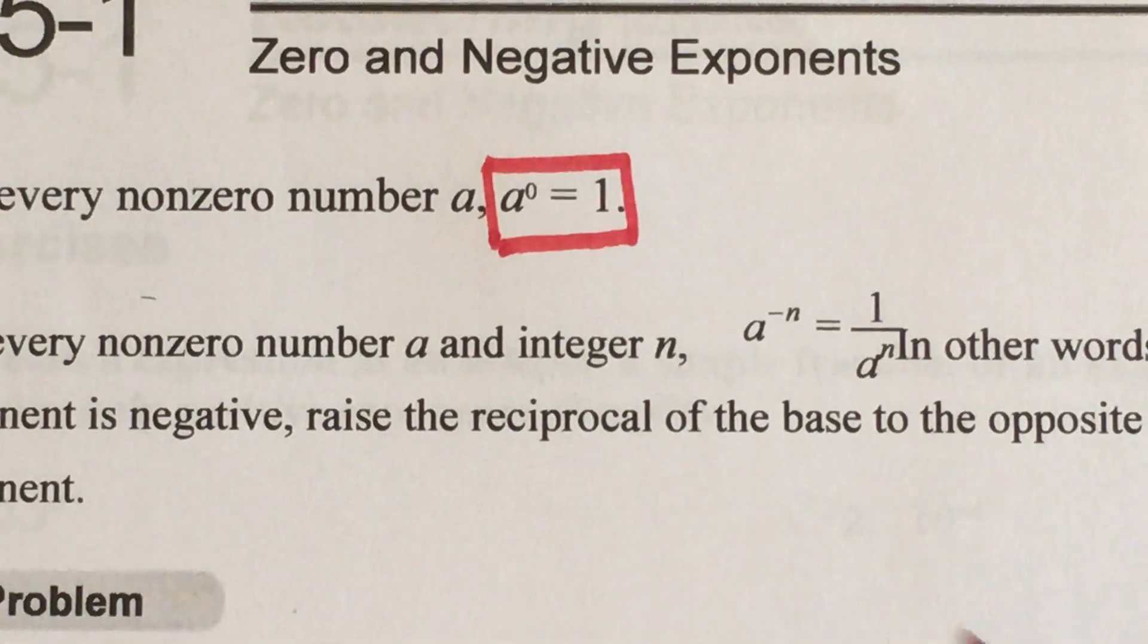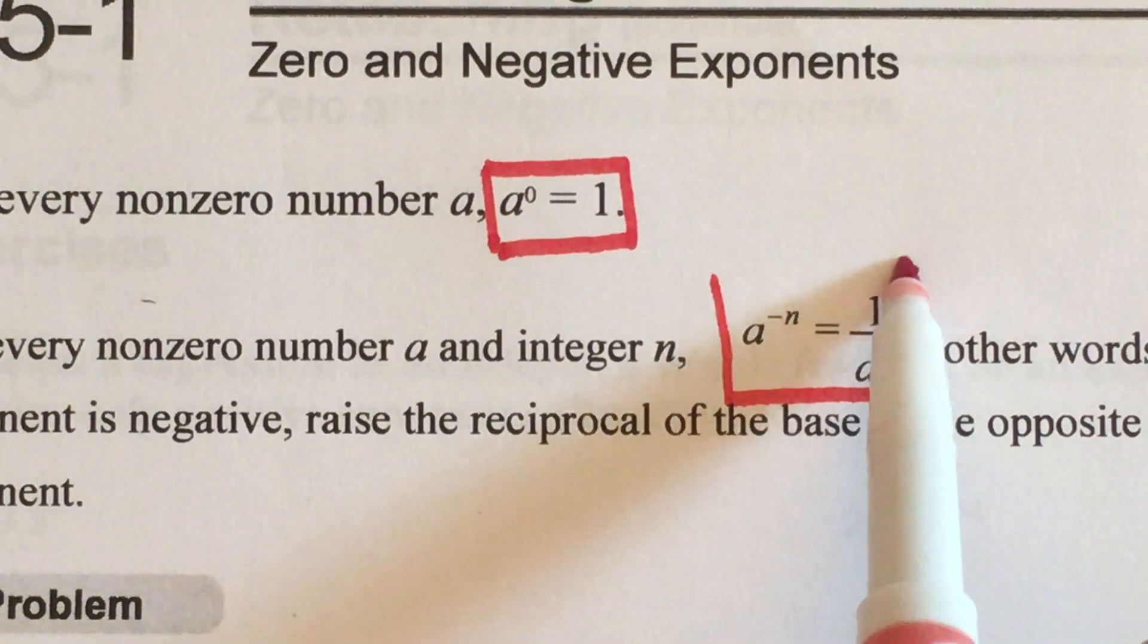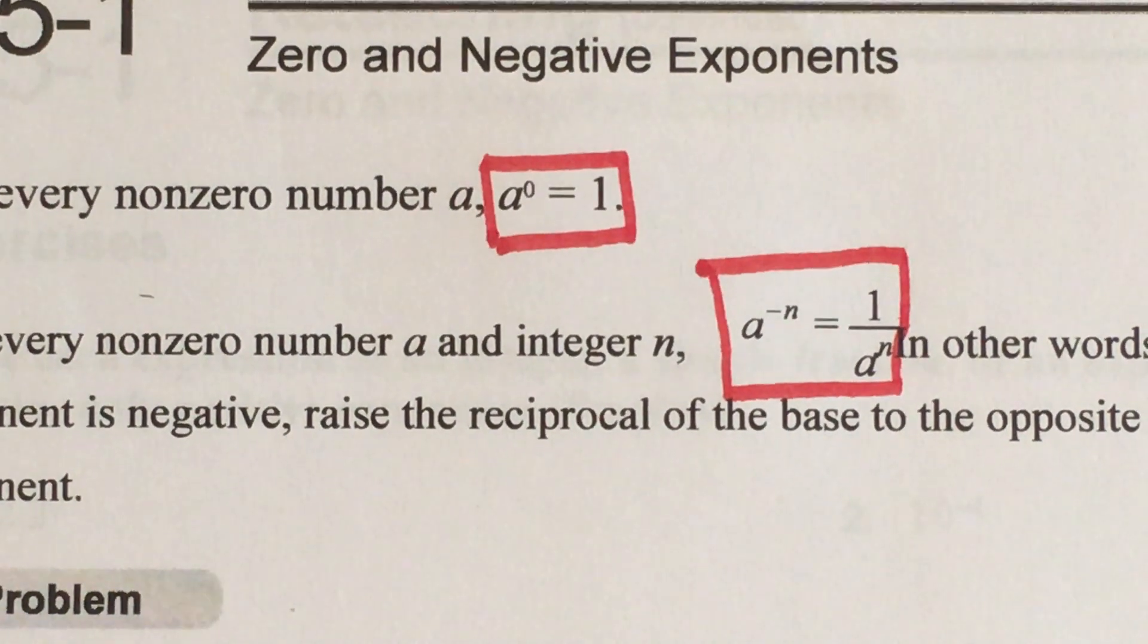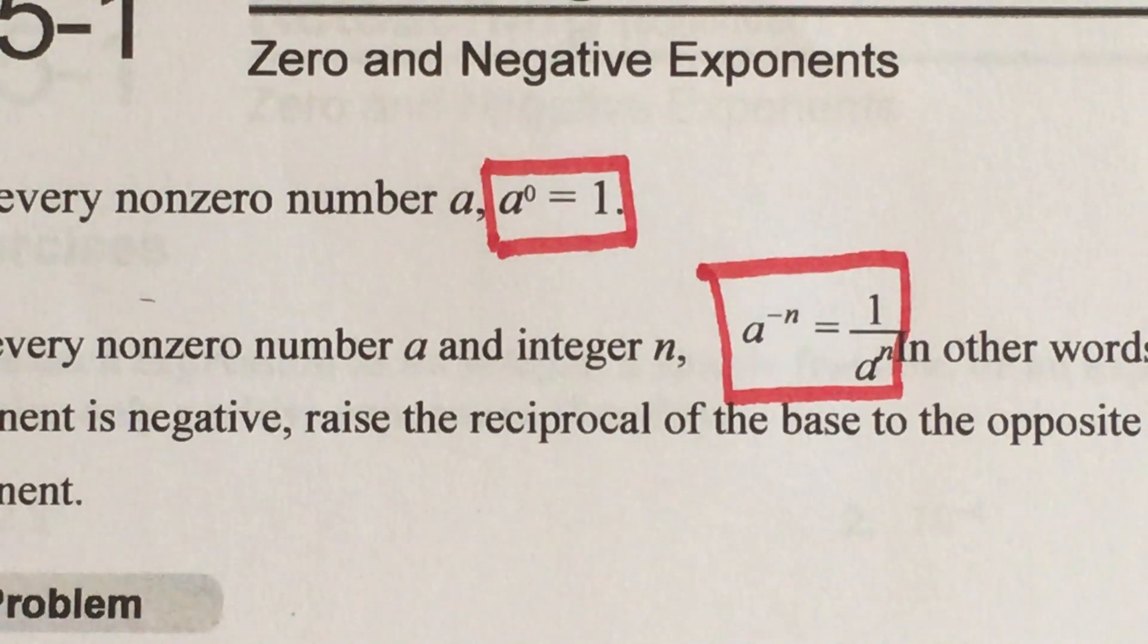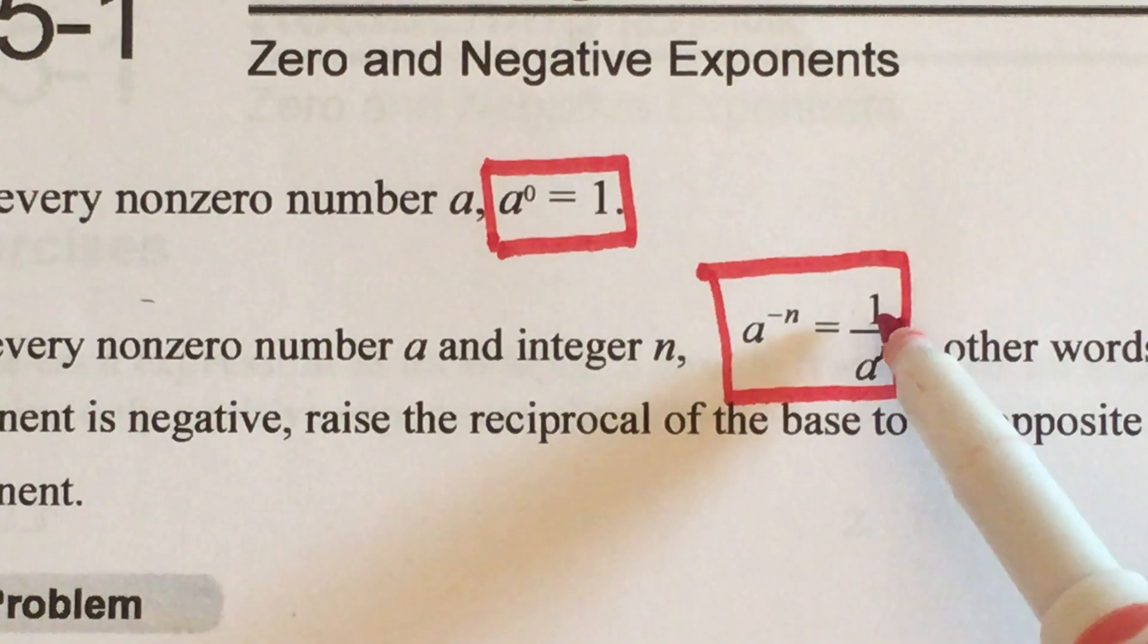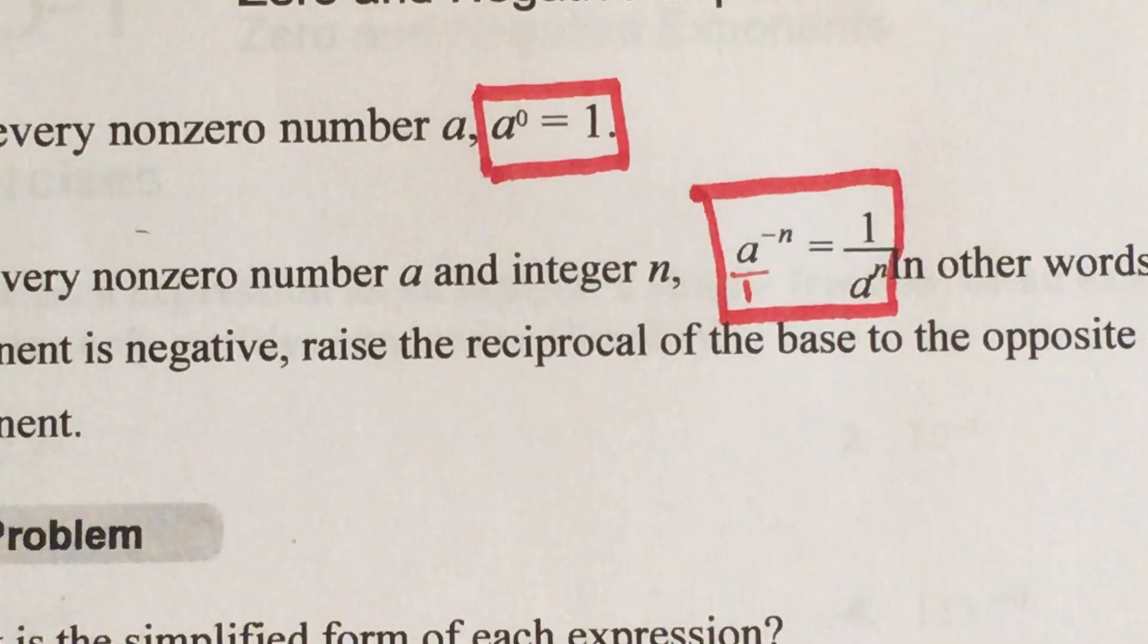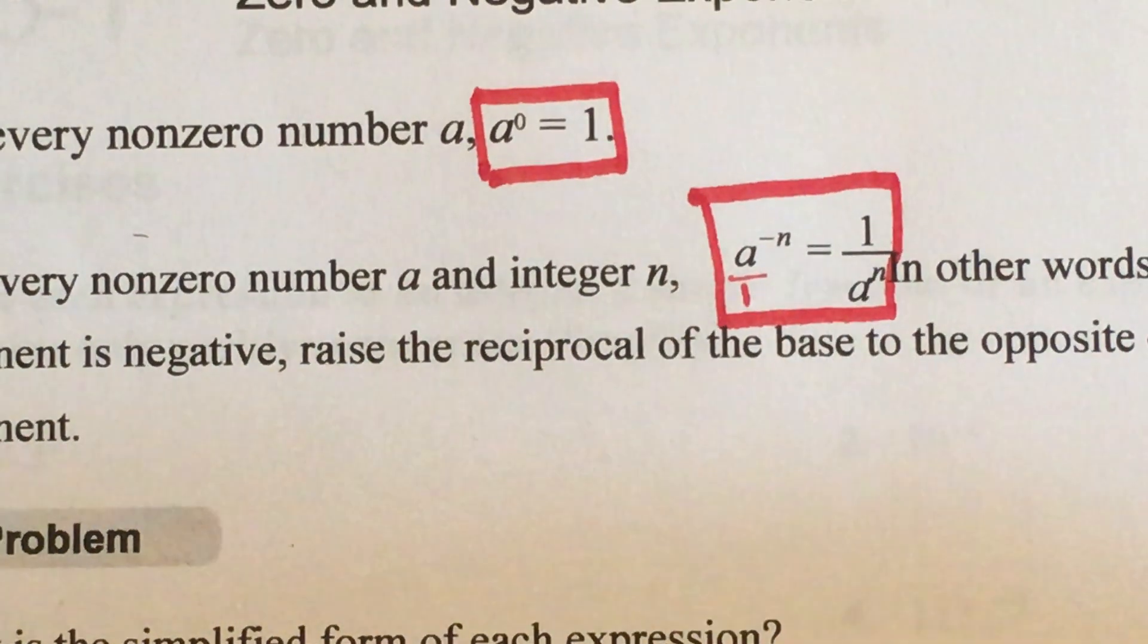We also discussed last class how if you have an a base with a negative exponent, that is equivalent to the reciprocal of that base now with a positive exponent. The most common question is where did this one come from. Remember whenever you have an integer there's always a one underneath of it, so when you take the reciprocal, when you flip over that base, the one is now on top.